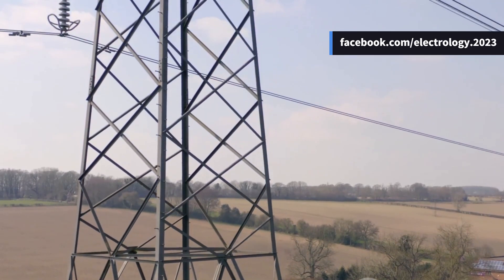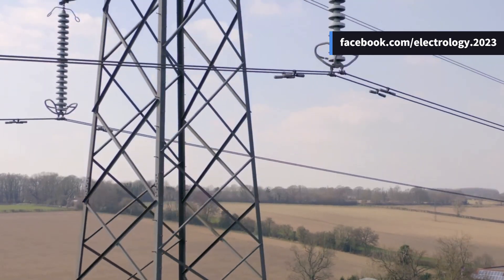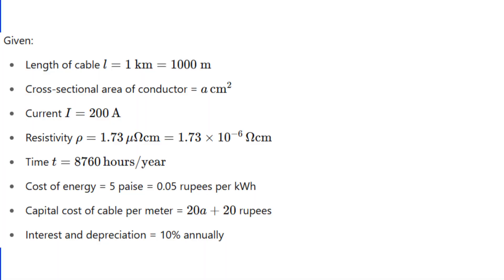Still confused? Let's solve an example, a really simple one. Suppose we have a one kilometer long two-conductor cable supplying a constant current of 200 amperes throughout the year. The cost of the cable, including installation, is given as 20A plus 20 rupees per meter, where A is in centimeter squared. Energy costs 5 paisa per kilowatt hour, and interest plus depreciation is 10% per year. The resistivity of the conductor material is 1.73 micro-ohm centimeter.